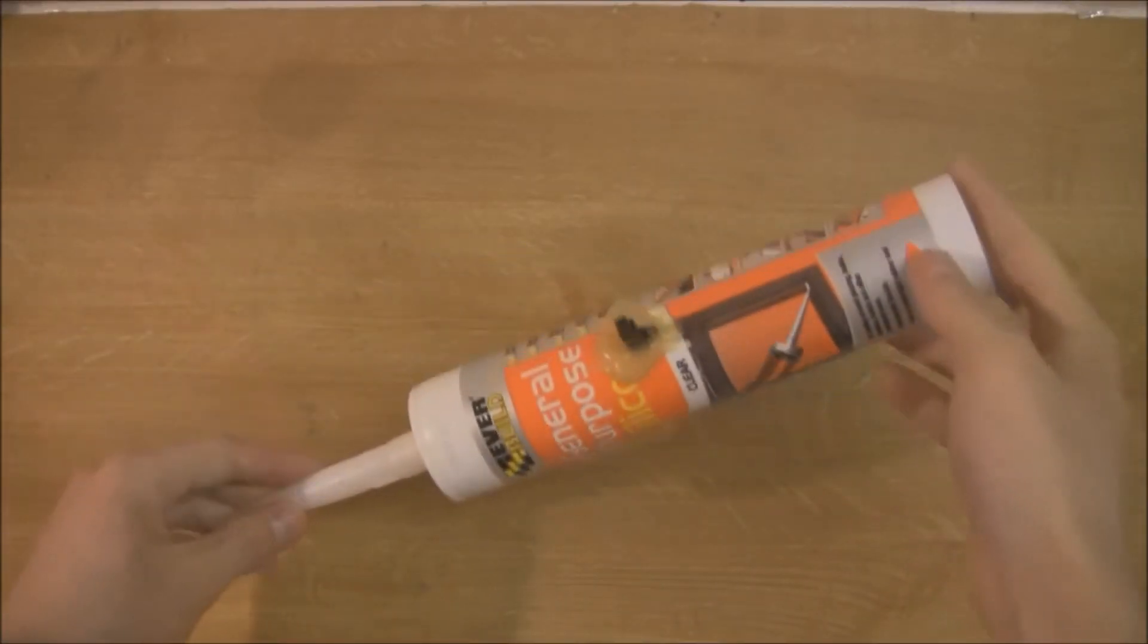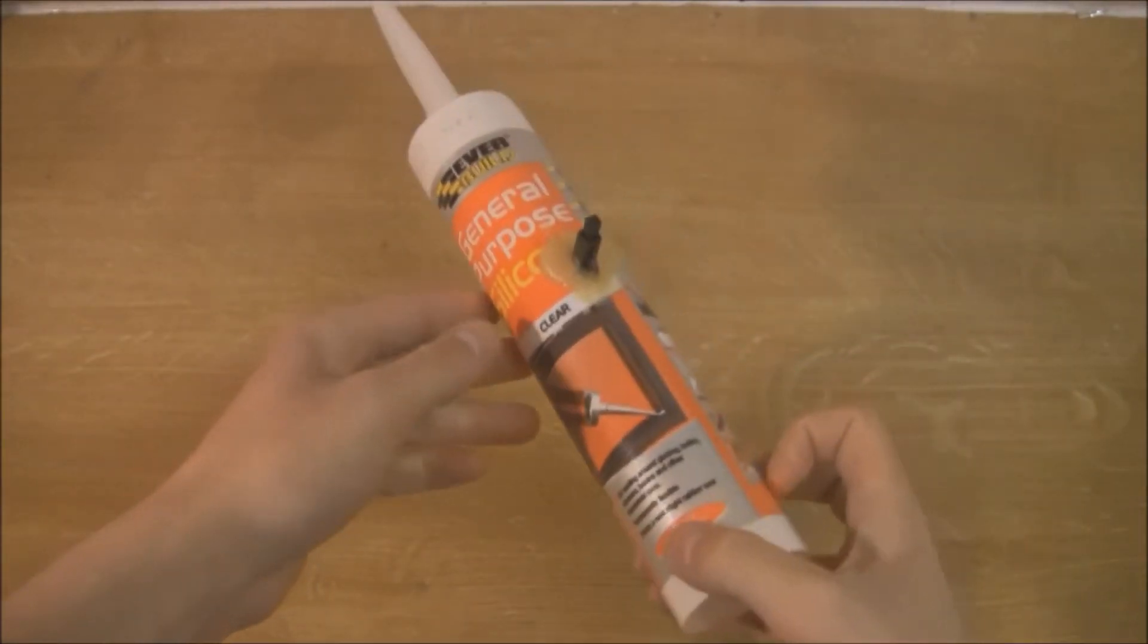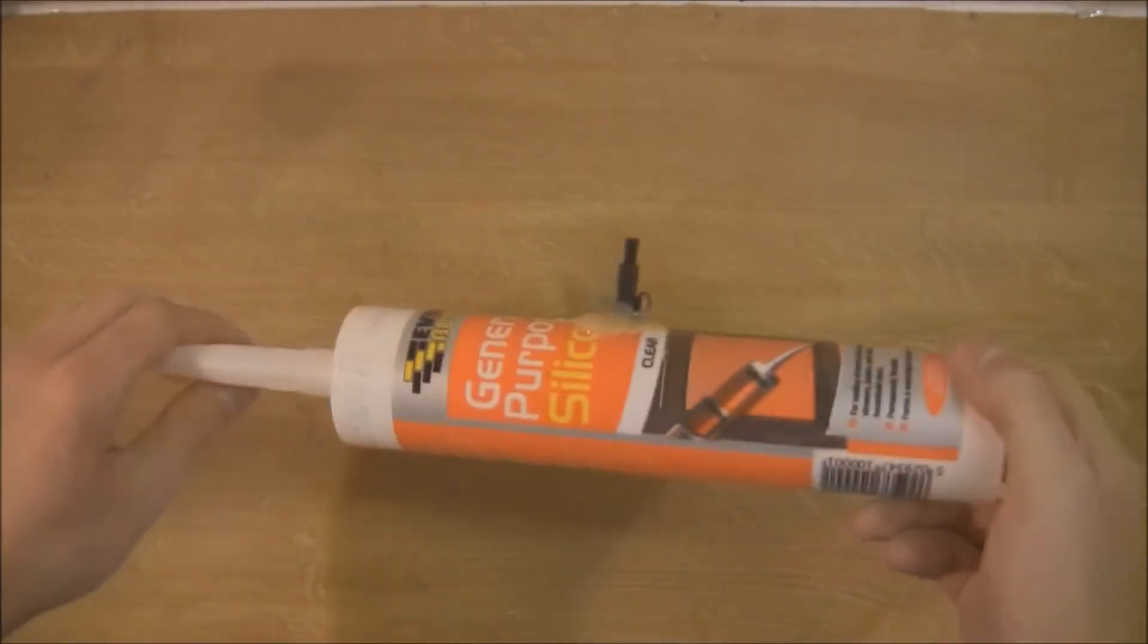In this tutorial I'm going to show you how to make a potato cannon out of an old silicon sealant tube and a lighter.